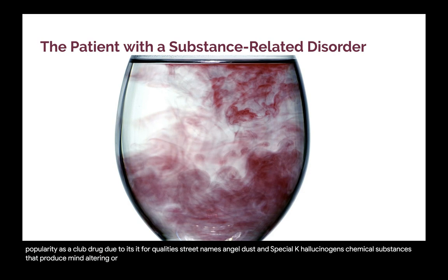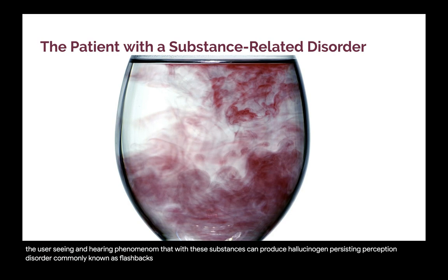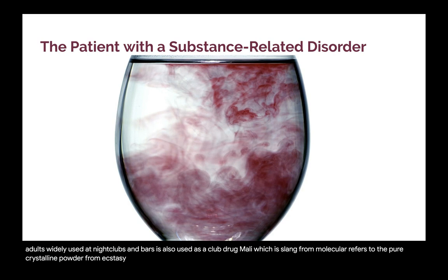Hallucinogens: chemical substances that produce mind-altering or mental perception-altering properties. These drugs act on the central nervous system, leading the user to see and hear phenomena that do not exist. A disorder associated with these substances can produce hallucinogen persisting perception disorder, commonly known as flashbacks. MDMA, also known as ecstasy or molly, is a popular drug among teens and young adults widely used at nightclubs and bars. Molly, slang for molecular, refers to the pure crystalline powder form of ecstasy. MDMA is classified as a stimulant but is known for its hallucinogenic effects. Examples include LSD, peyote, dimethyltryptamine, and magic mushrooms.